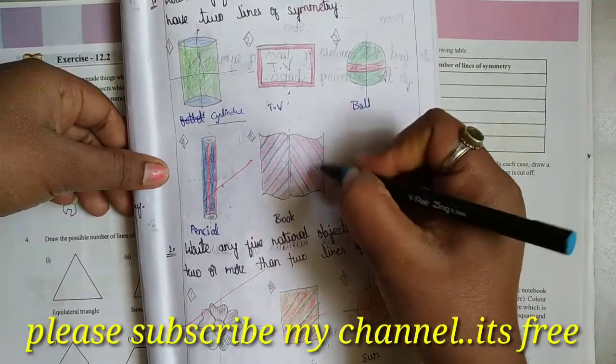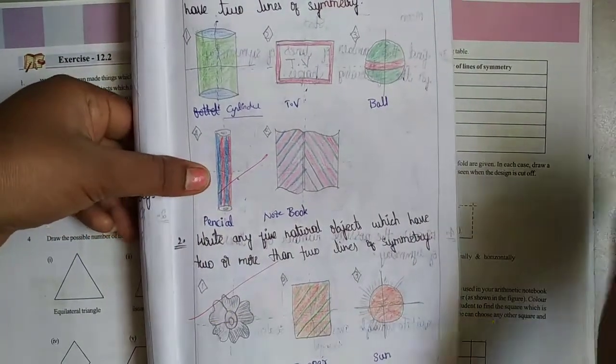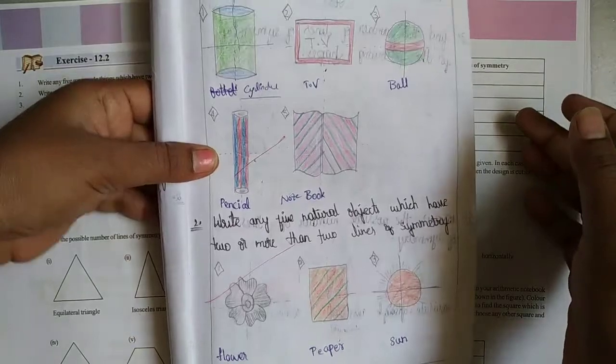Pencil also has horizontal and vertical symmetry. Book, notebook also has horizontal and vertical symmetry.